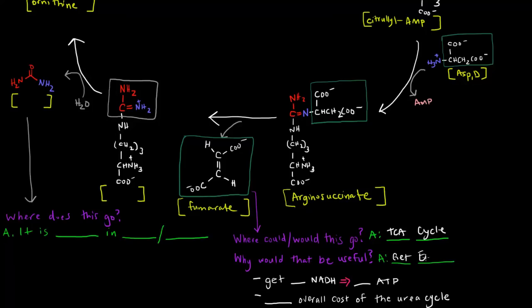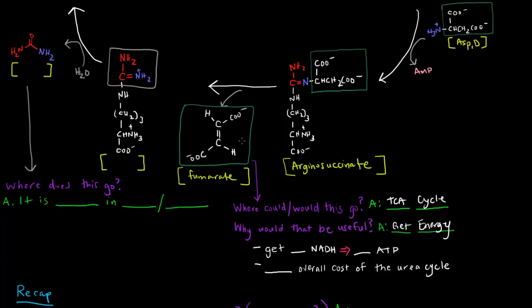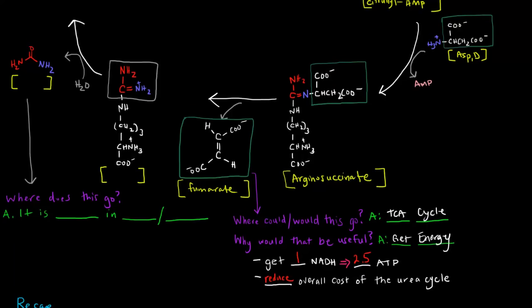Because we can get energy from this. We can get energy from that fumarate. All the steps after fumarate. Fumarate could actually yield us one NADH from the malate dehydrogenase step, which is the equivalent of 2.5 ATP. Why on earth is that useful or important? Because this 2.5 ATP will basically reduce the overall cost of the urea cycle. Because there's energy investments involved in the urea cycle, which we talked about just a moment ago.